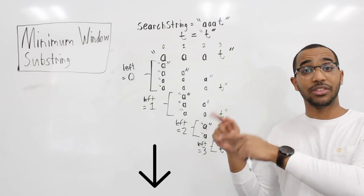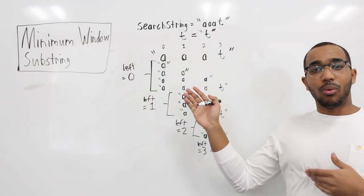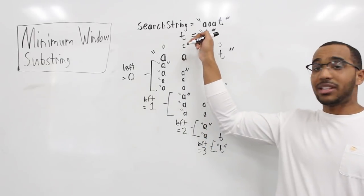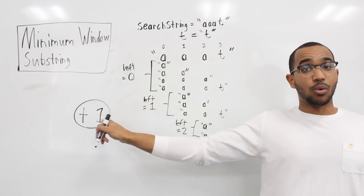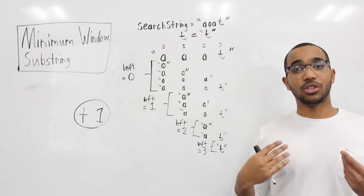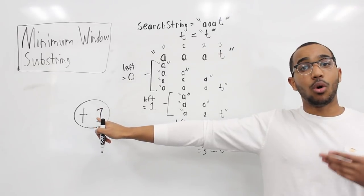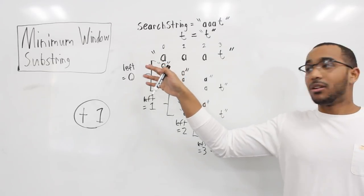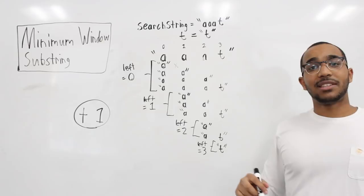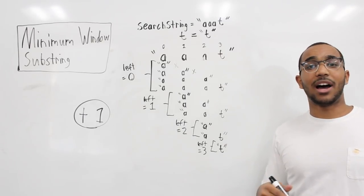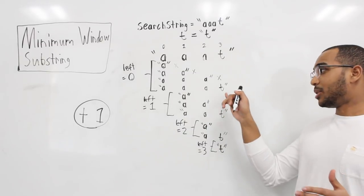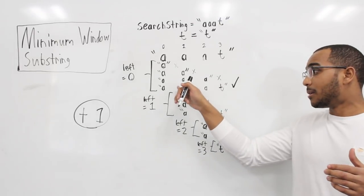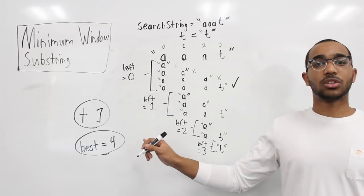The code for both the brute force and optimal approach is in the description. For each window, we check: does it satisfy the constraints? Our constraint is the character T with one occurrence. All we want is one or greater occurrences of T in that window. Going through: first window — does it satisfy? No. Second — no. Third — no. Fourth — yes, it does have the character we want. So the best we've done is length four.